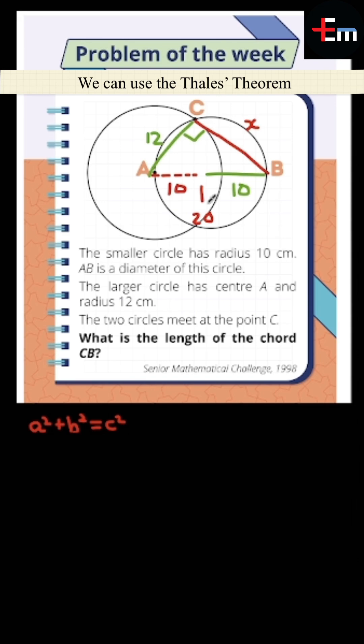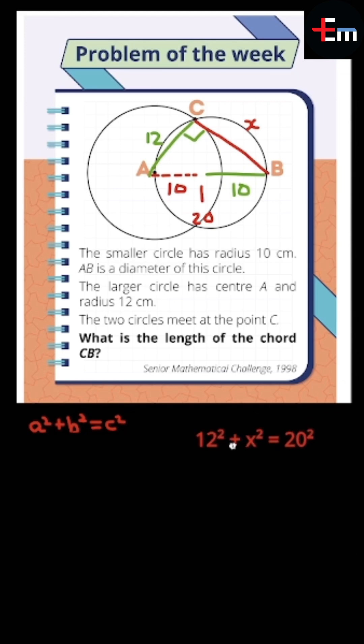We can use the Thales theorem to prove that it's a 90 degree angle, which makes it a right angle triangle inside the circle.